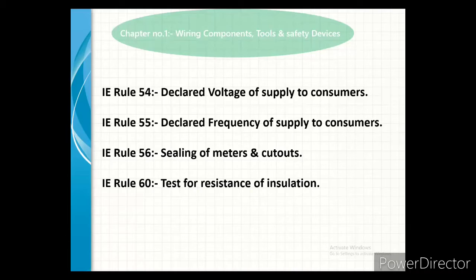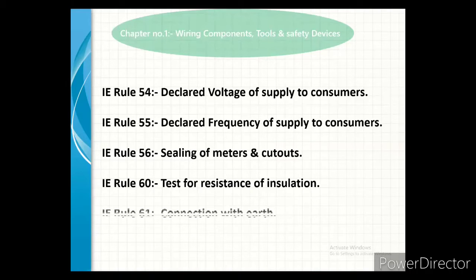Rule number 16 covers the test for resistance of insulation. The insulation provided at consumer premises is tested to determine the insulation resistance of that wiring or insulation system. Also, Rule number 61, connection with earth — for safety purposes, we install the earthing system in consumer premises.